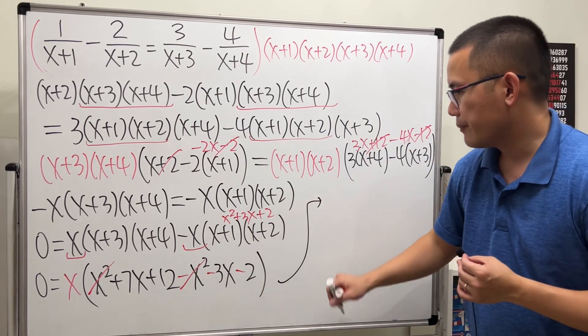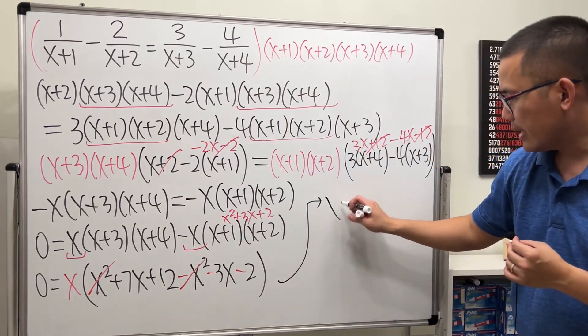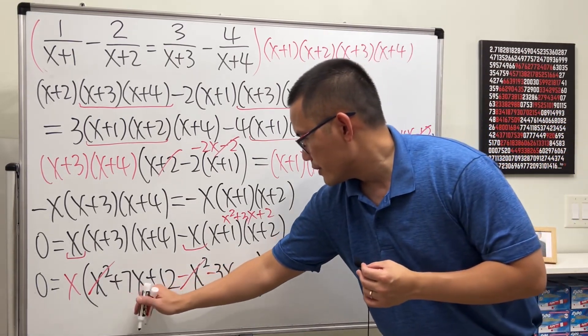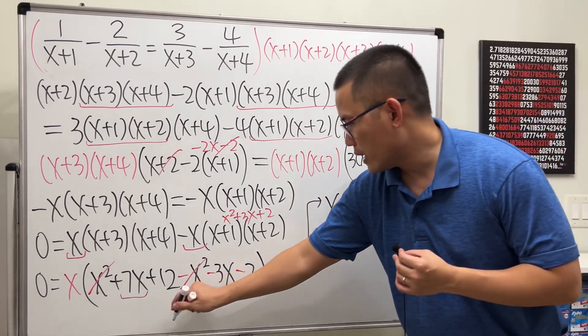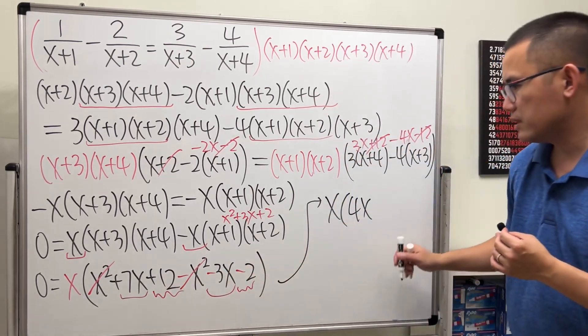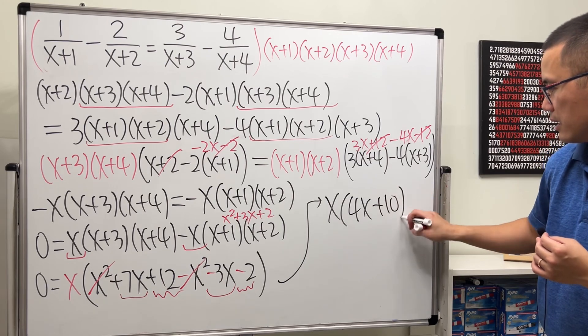So, now we get... Let me write down the x first. And then we have this, and that is 4x. And then 12 minus 2 is 10. That's equal to 0.